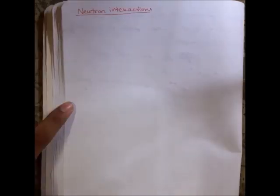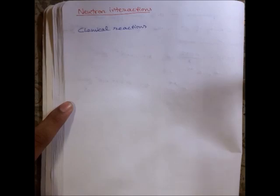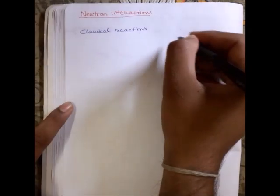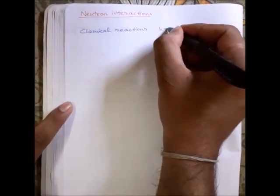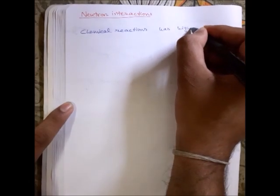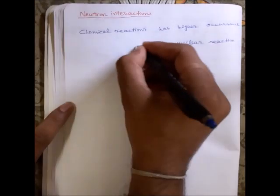Hello guys, today we're going to discuss neutron interaction. Compared to chemical reactions, nuclear reactions have less chance. Chemical reactions have higher occurrence probability than nuclear reactions.